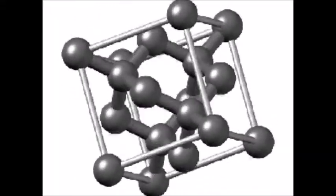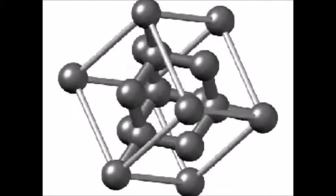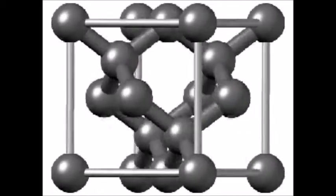Silicon has a diamond cubic structure, which is a unit cell with eight atoms per cell. This makes the crystal more efficient and a better conductor of electricity.